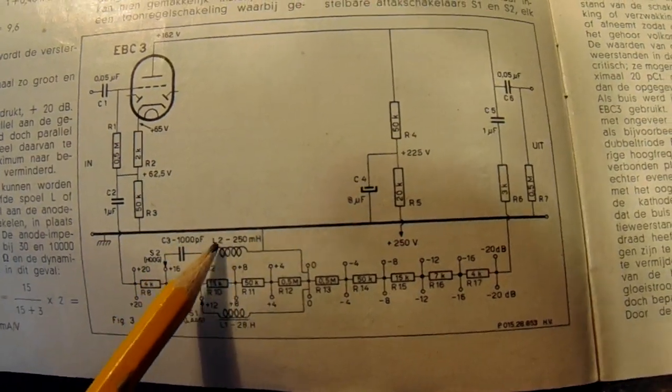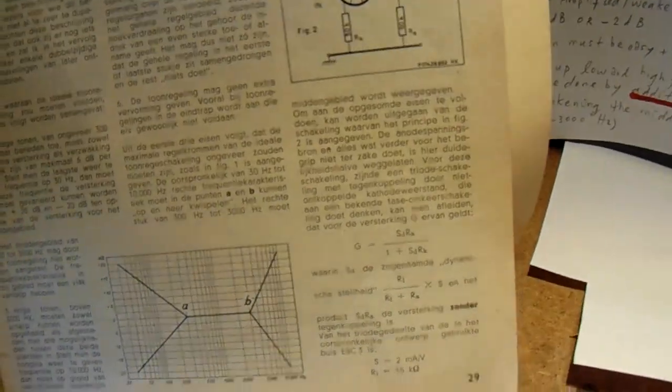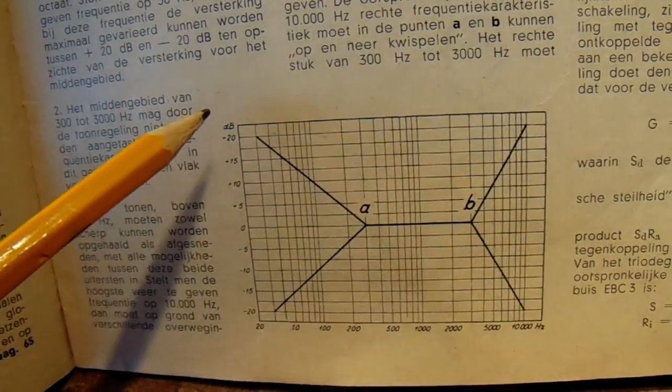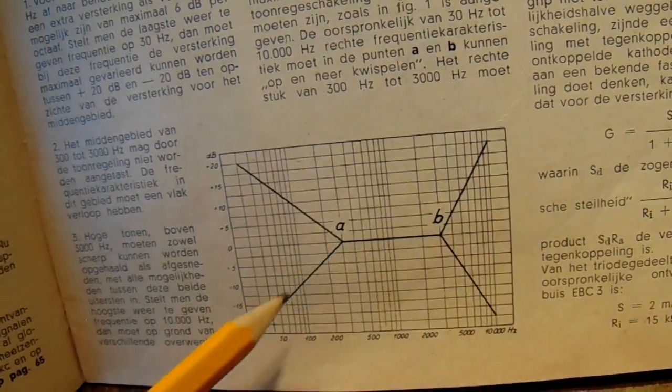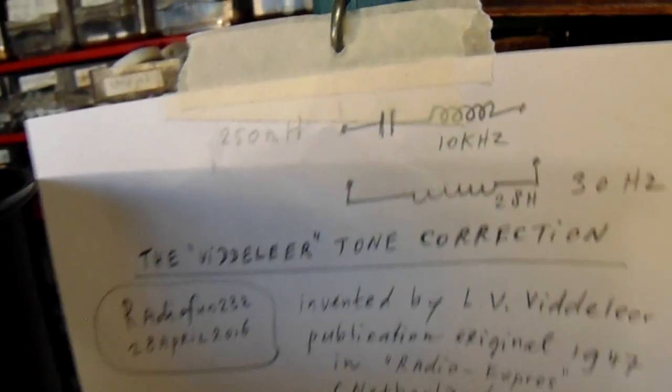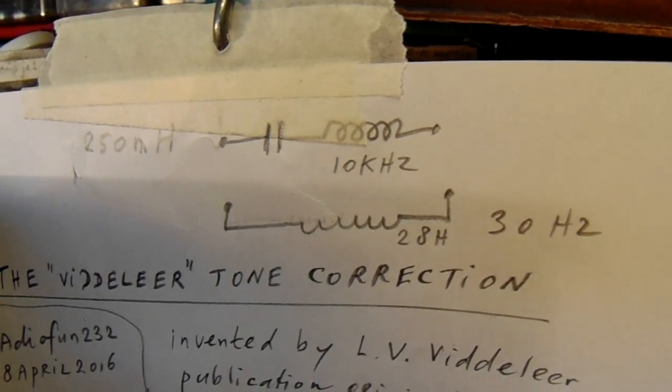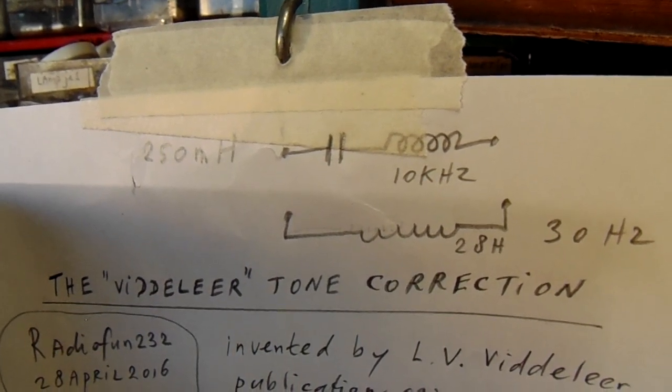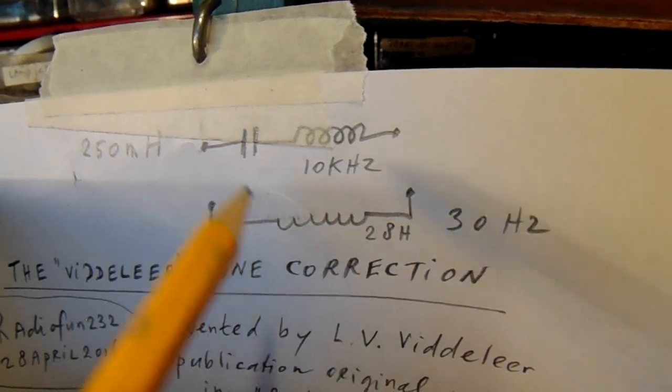Two coils that he uses and here you can see the enormous difference from the inductance from the coils to lift up the low frequencies here and to lift up and weaken and also here weaken the high frequencies. These are the coils that he uses, a coil from 28 henry and from 250 nano henry. So there's an enormous difference here in inductance between these two coils.